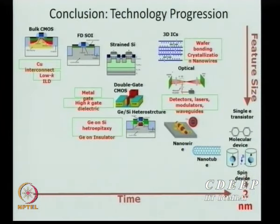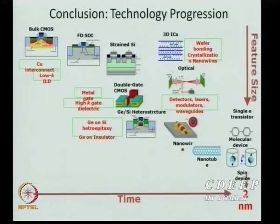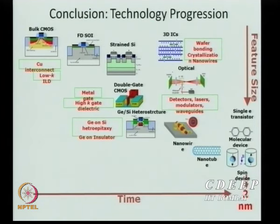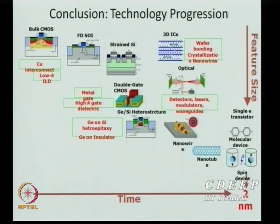Technology progression has included: bulk CMOS, fully depleted SOI, strained silicon, double-gate, triple-gate, silicon germanium heterostructures, and now germanium on silicon transistors (returning to 1940s-era materials with new advantages). We are also looking at nanowires, nanotubes, single transistor devices, and spin devices controlled magnetically — all potentially enabling very high speed and low power performance.